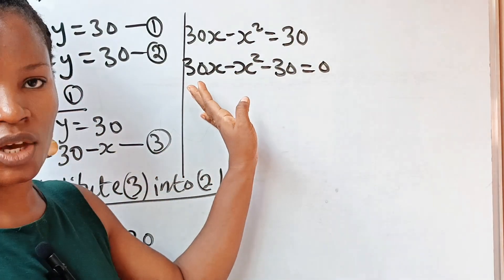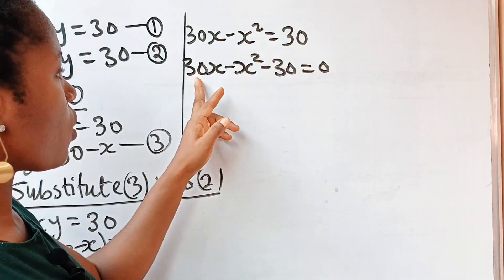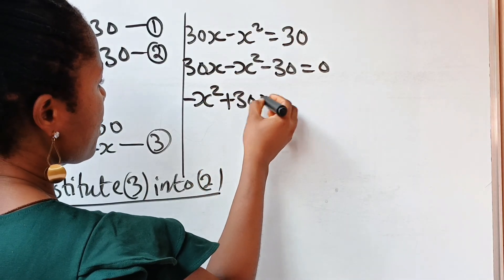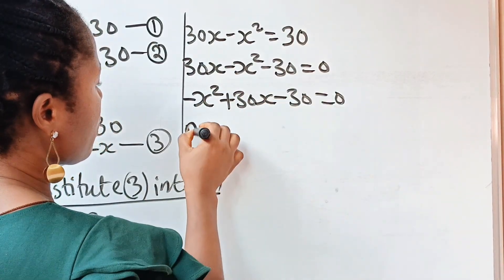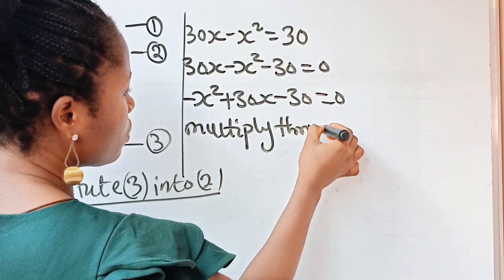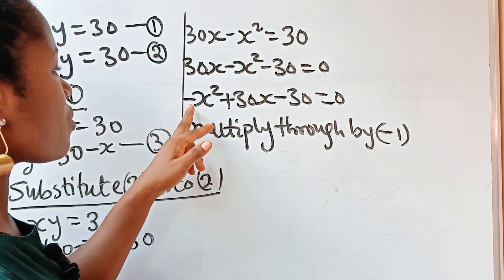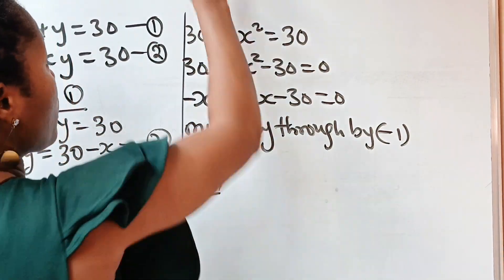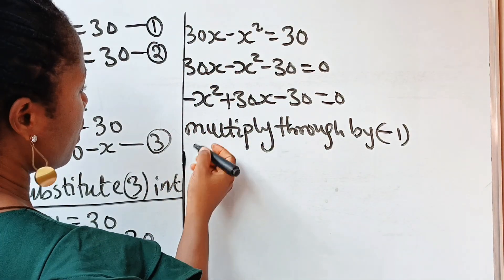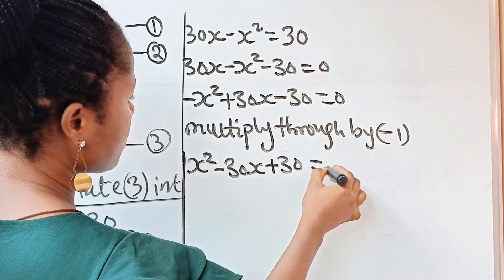Now this is a quadratic equation. Let's rearrange it: minus x squared plus 30x minus 30 is equal to 0. Now let's multiply through by minus 1 — the essence is to remove the negative sign — so we have x squared minus 30x plus 30 is equal to 0.